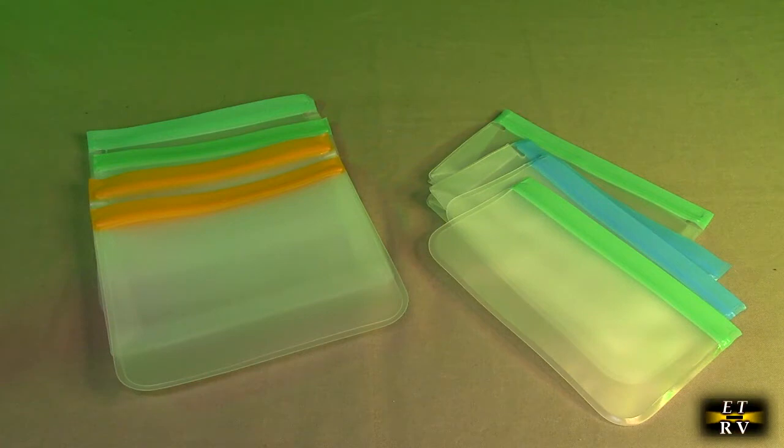This FDA grade PEVA is a recycling material and it's safe for meat, chicken, shrimp, fish, sandwiches, cookies, anything. It's not going to leach out into your food and this is really high quality thickness.